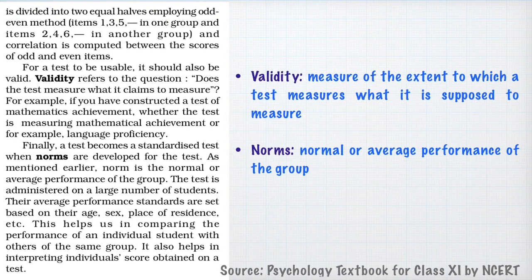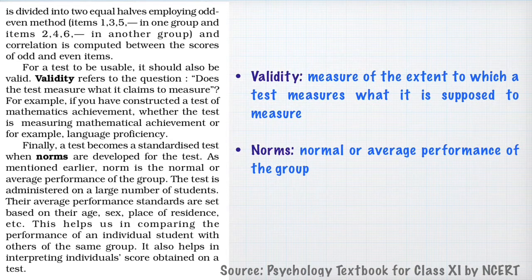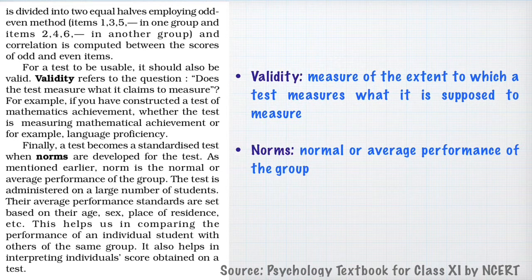Validity is another quality of a psychological test. Validity refers to the measure of the extent to which a test measures what it is supposed to measure. A test is highly valid when it measures the quality it is supposed to measure — for example, a valid intelligence test measures the intelligence of the person to a great extent.